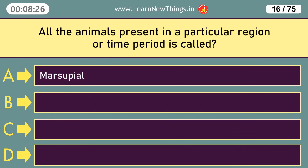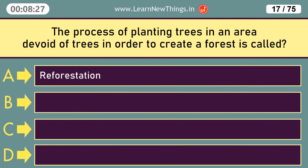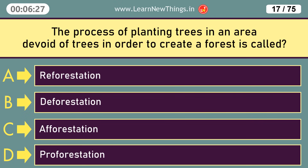All the animals present in a particular region or time period is called Fauna. The process of planting trees in an area devoid of trees in order to create a forest is called Afforestation.